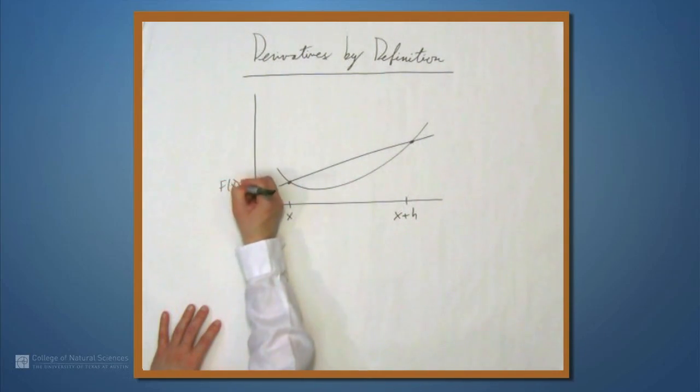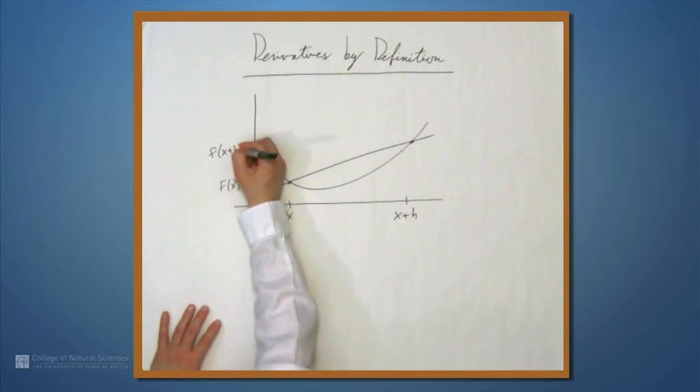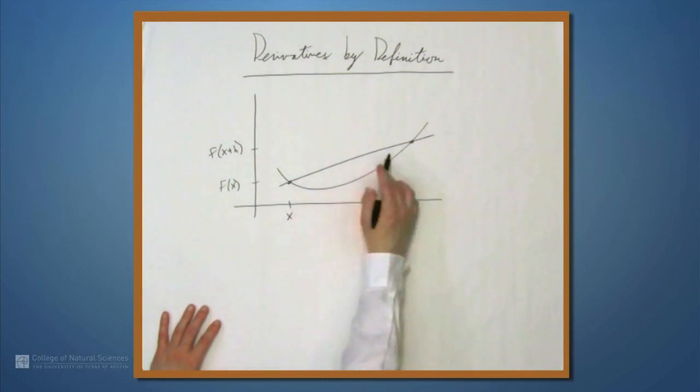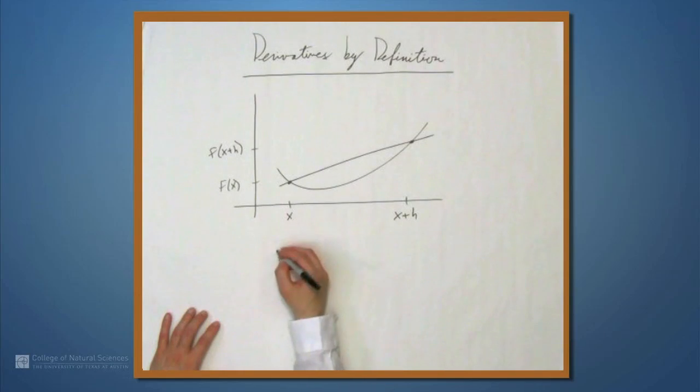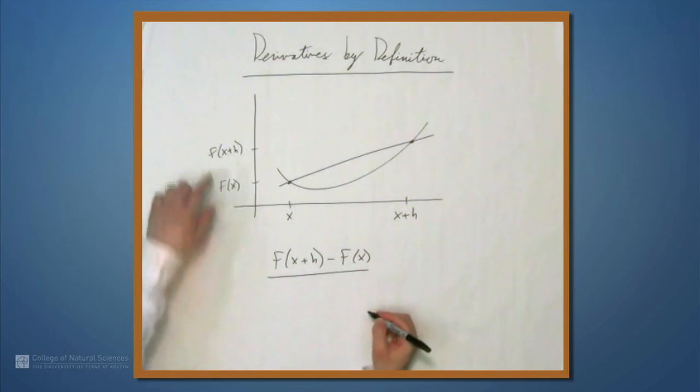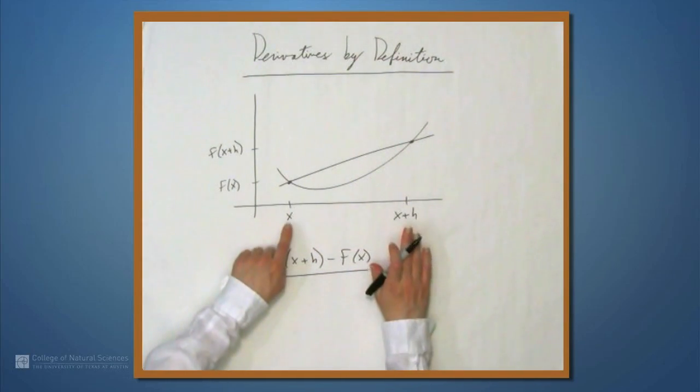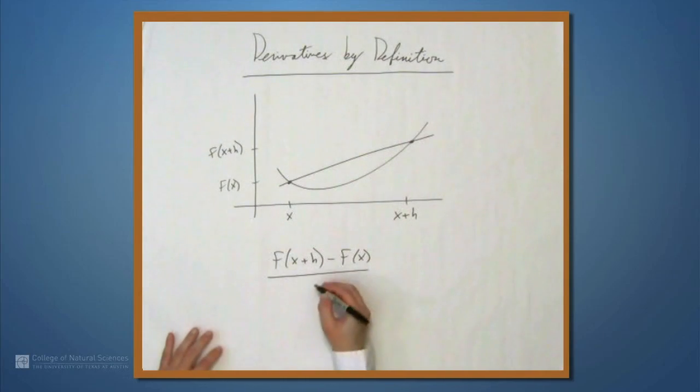To find the slope, we'll also use f(x) and f(x+h). So, the slope of the line that I've just drew is f(x+h) minus f(x) all over the difference between these two, which is h.